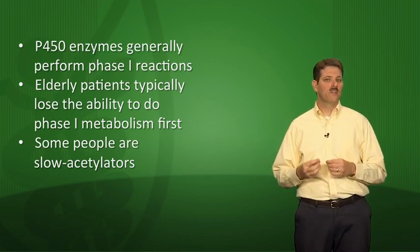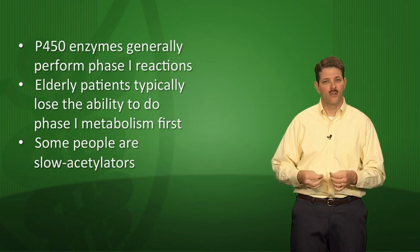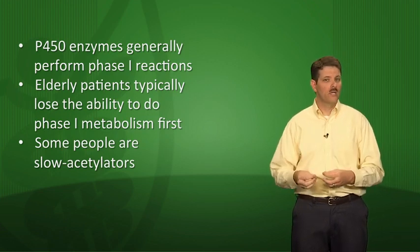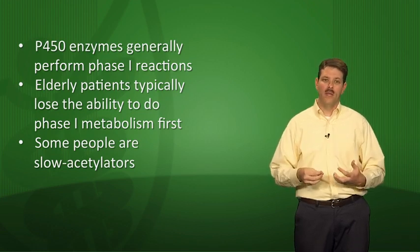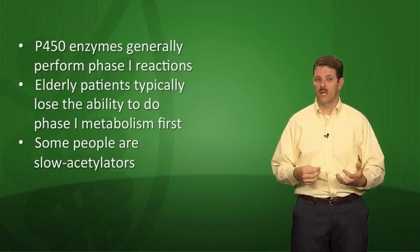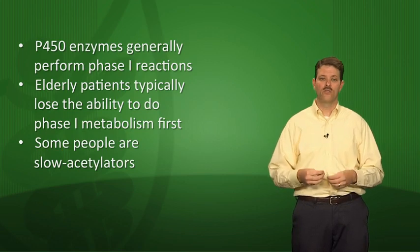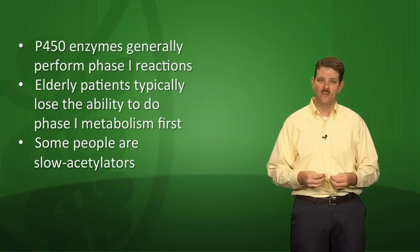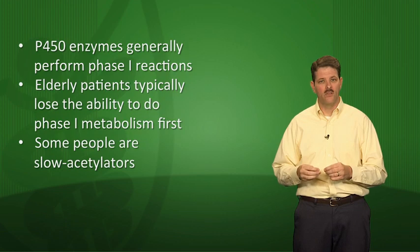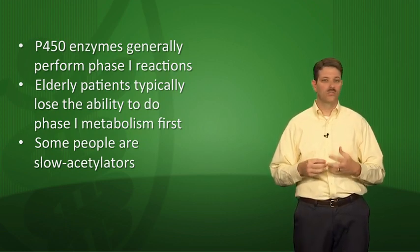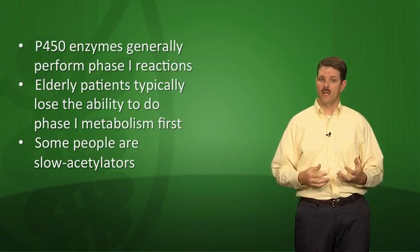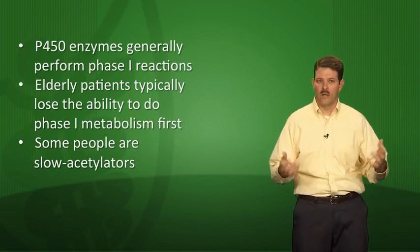Third, some people are slow acetylators — they don't acetylate drugs readily. Acetylation is a conjugation reaction, a phase two reaction. That means slow acetylators are slow to inactivate certain drugs. If you keep dosing normally, the drug builds up, leading to higher than average drug levels and increased risk of toxicity and side effects. So slow acetylators may only need to take a drug once a day instead of twice.